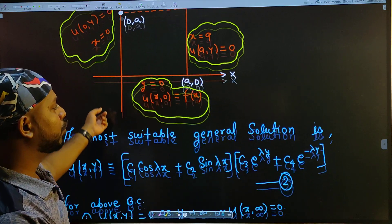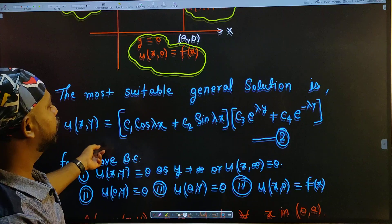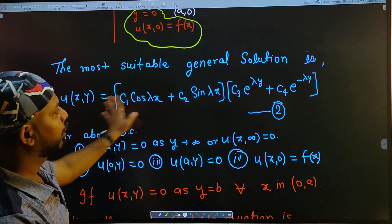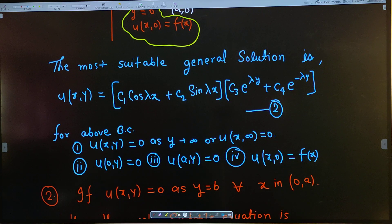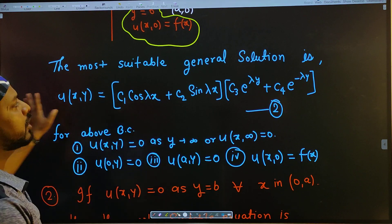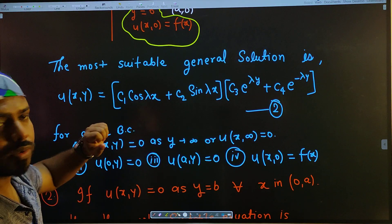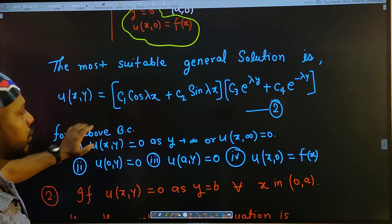The most suitable general solution is: u(x, y) = (c₁ cos λx + c₂ sin λx)(c₃ e^(λy) + c₄ e^(-λy)). So this is the most general solution.